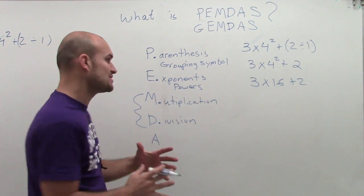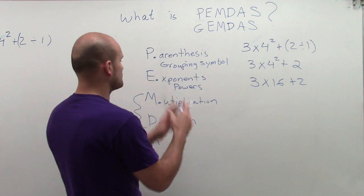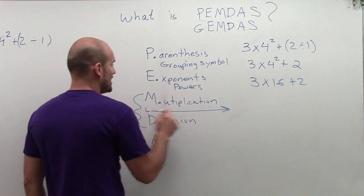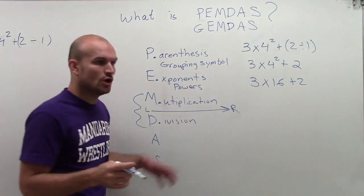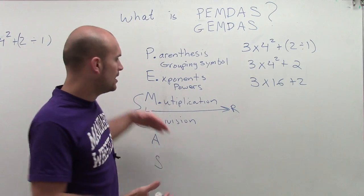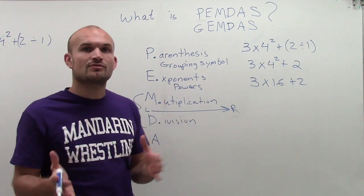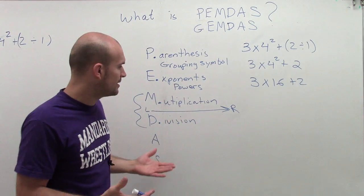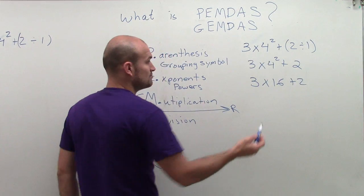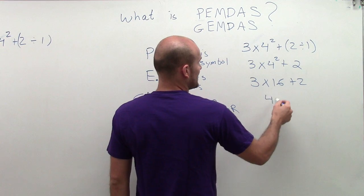The main important thing we need to make sure we do is when we read our expression, we have to make sure we go from left to right. So don't just do multiplication before division because you see multiplication. Just work from the left to the right just like you read a sentence. So here, I only have one of them which is multiplication. So 3 times 16 would be 48.